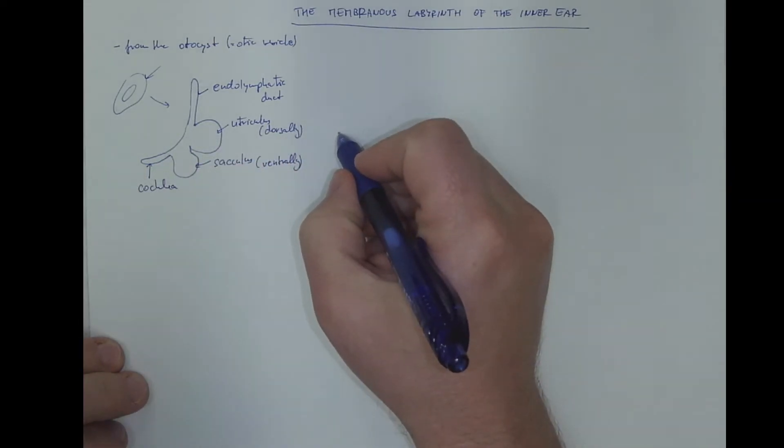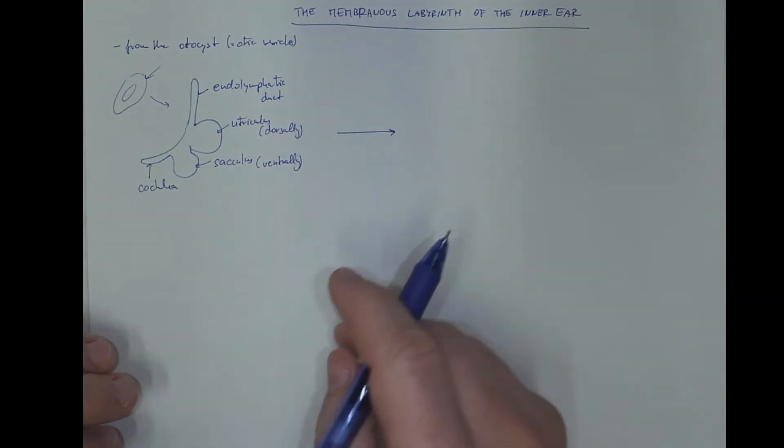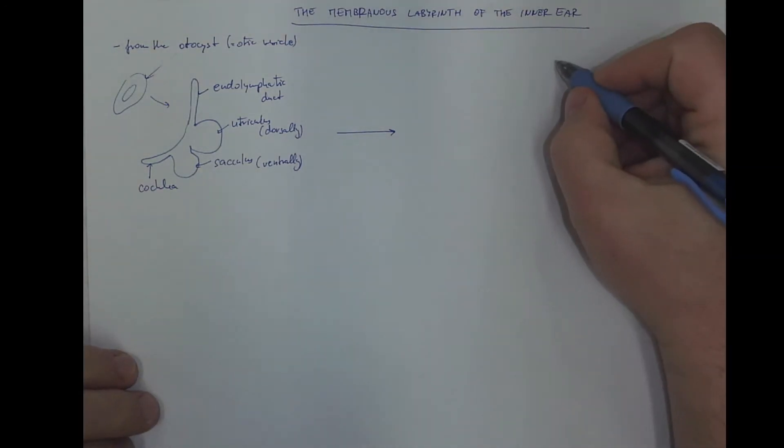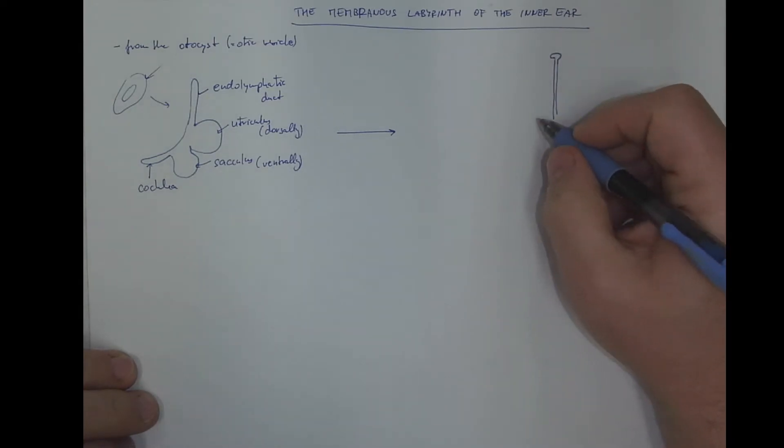Then it grows and is transformed to a form that already resembles the final shape. We got the longer endolymphatic duct, which ends blindly with the endolymphatic sac.